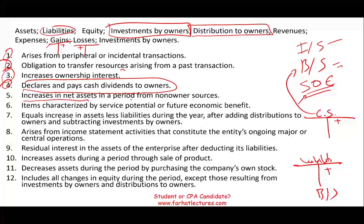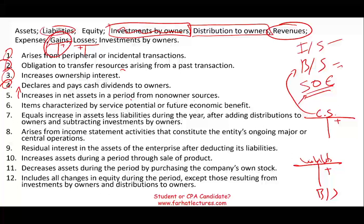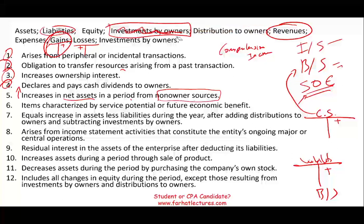Number five: increases net assets in a period from non-owner sources. We are increasing net assets, but that increase has nothing to do with owners — so we cannot count investment by owners. Anything that increases assets from non-owner sources could be revenues or gains, since both increase equity. By definition, revenues and gains are also part of comprehensive income. Non-owner sources means we exclude distribution by owners and investment by owners. Net assets equals equity.